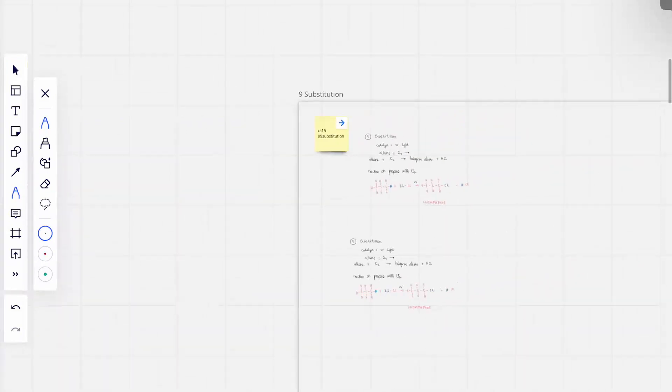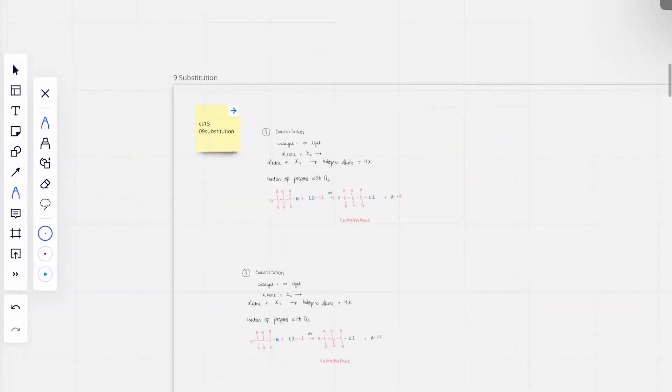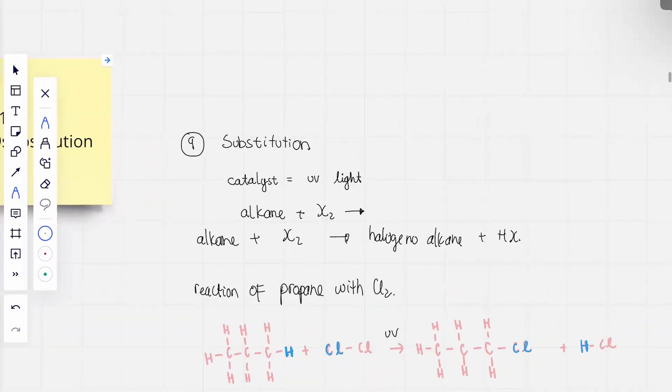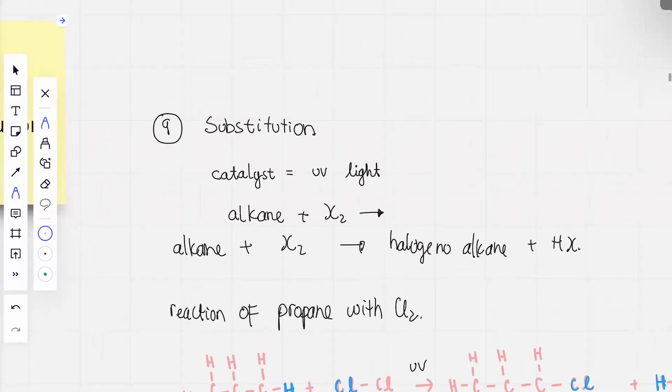Okay, then this is new. Substitution. Yes. Alkane plus X2. X2 is halogen. X is the symbol of halogen, so X can be replaced with F or Cl or Br or I.